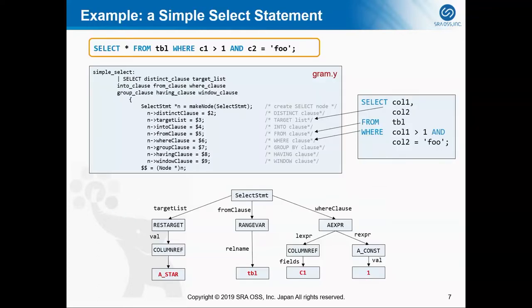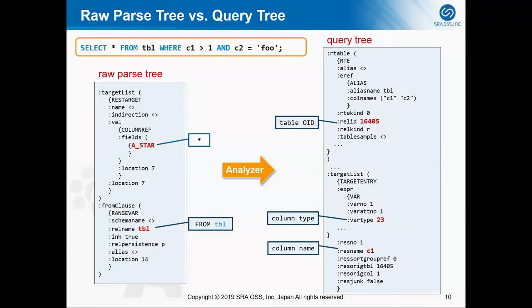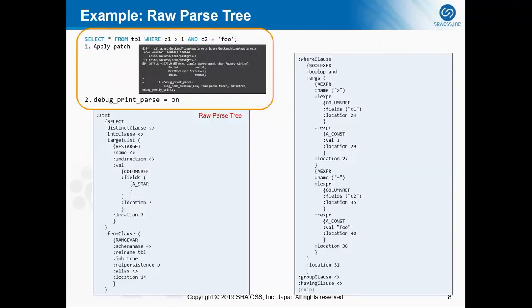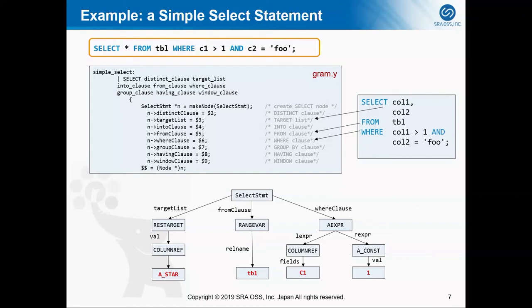Here I will show you an example of a simple SELECT statement. You can see an example statement and here is a part of the gram.y file. This statement is a simple SELECT statement. It will match the simple select rule, so a select statement structure will be created. Then the target list, FROM clause, and WHERE clause will be set to this structure. And then this kind of parse tree will be generated.